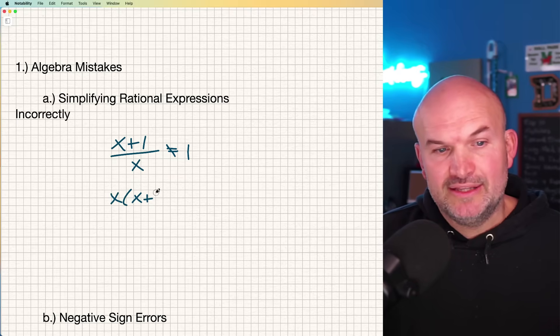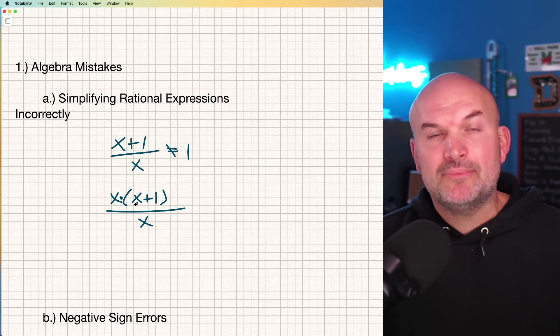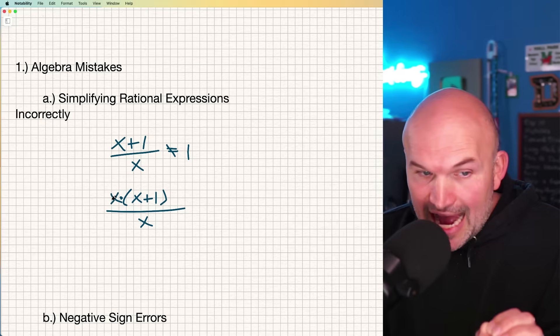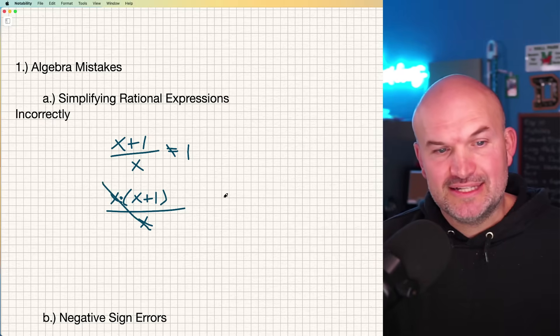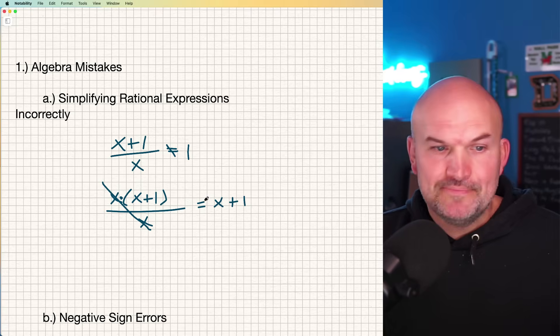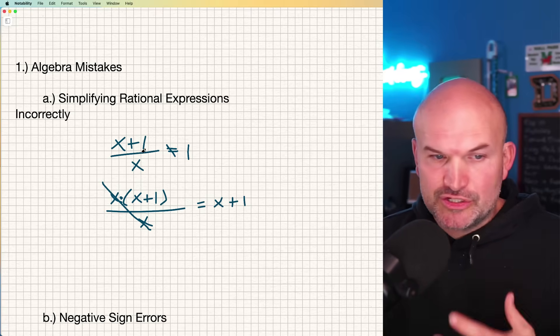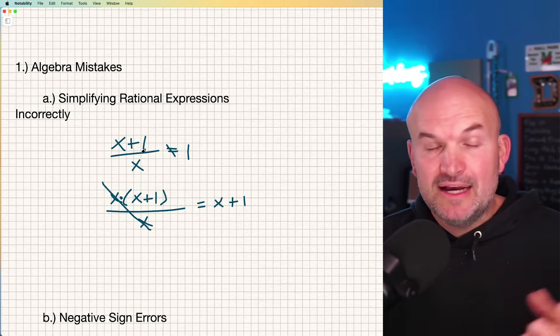The correct way you could apply the division property is if you have quantities separated by multiplication. Now I can divide out these two X's, and therefore I would just have a final answer of X plus one.